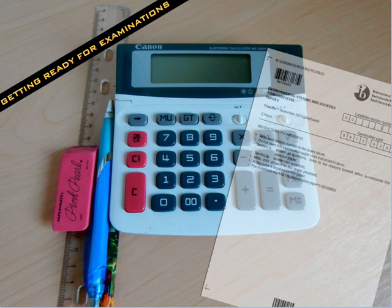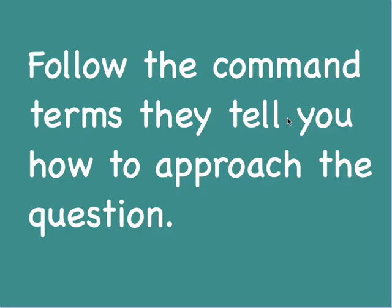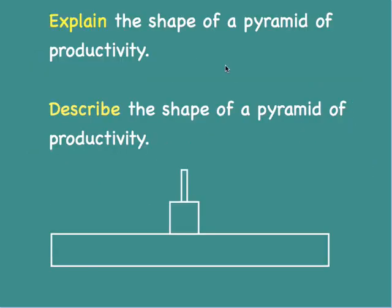Welcome. Today we look at some tips for the external examinations in IB Environmental Systems and Societies. Follow the command terms — they tell you how to approach the question. For example, 'describe the shape of a pyramid of productivity' would simply require you to say that it is always in the form of a pyramid.